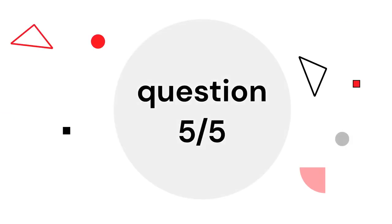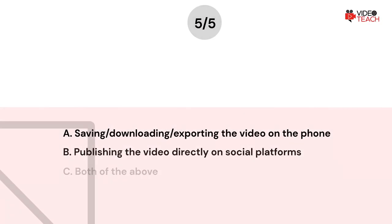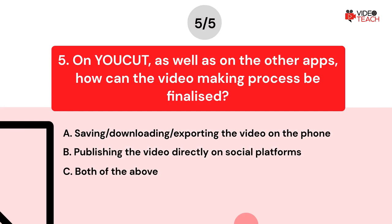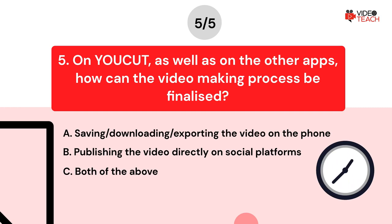Question number five. On YouCut, as well as on the other apps, how can the video making process be finalized? Option A: Saving, downloading, or exporting the video on the phone. Option B: Publishing the video directly on social platforms. Option C: Both of the above. Now you have about 15 seconds to think about your answer.